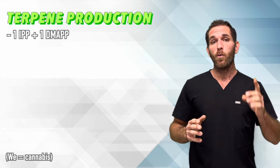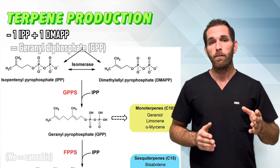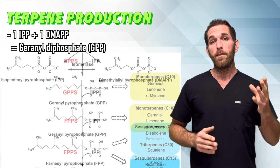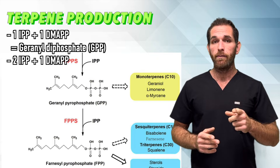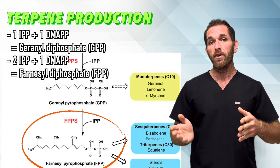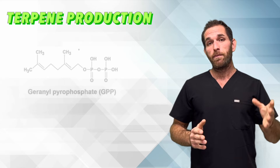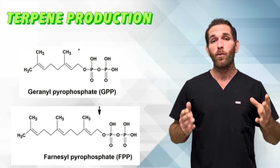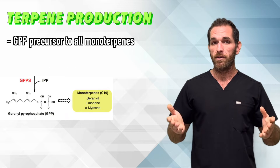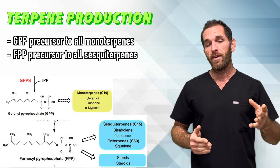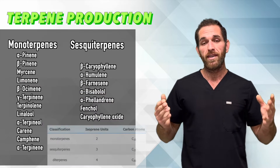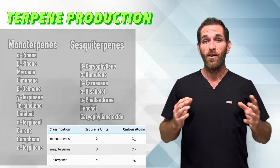When we combine one IPP with one DMAPP, we produce a 10-carbon molecule called geranyl diphosphate, or GPP. The combination of two IPPs with one DMAPP produces a 15-carbon molecule called farnesyl diphosphate, or FPP. GPP and FPP are probably the two most important molecules when discussing terpene production. GPP is the parent compound from which all monoterpenes are derived, and FPP is the parent compound from which all sesquiterpenes are derived — and cannabis mostly contains monoterps and sesquiterps.